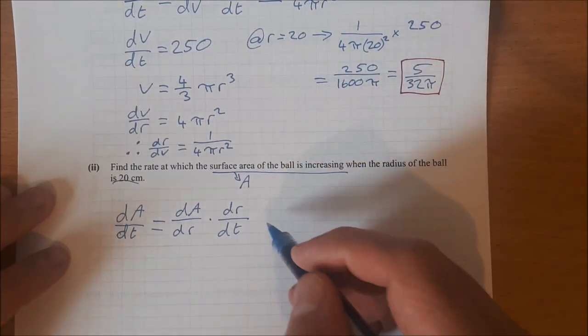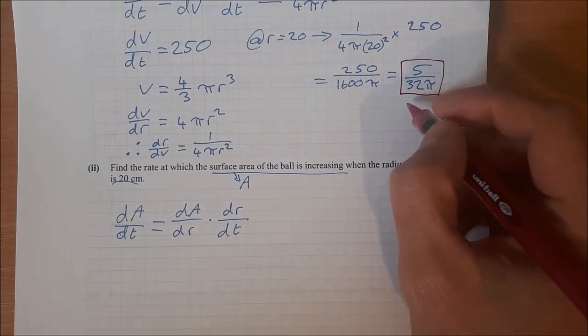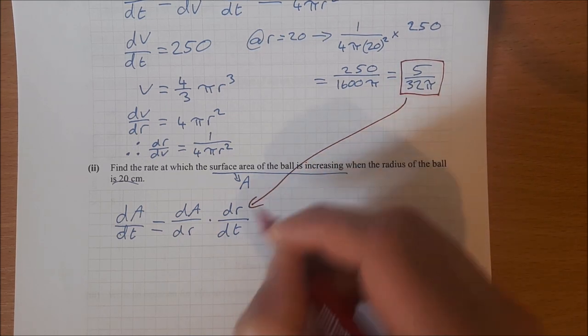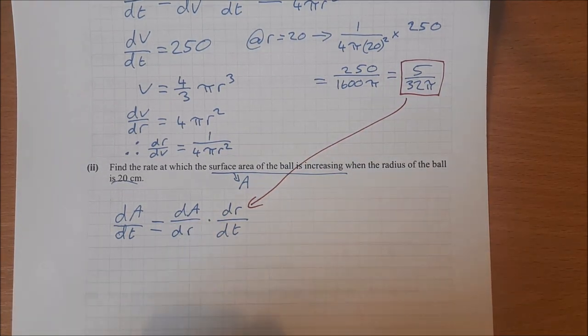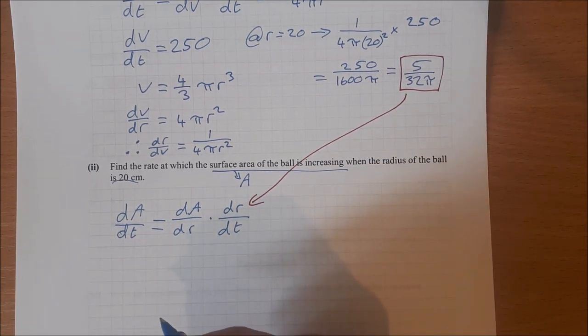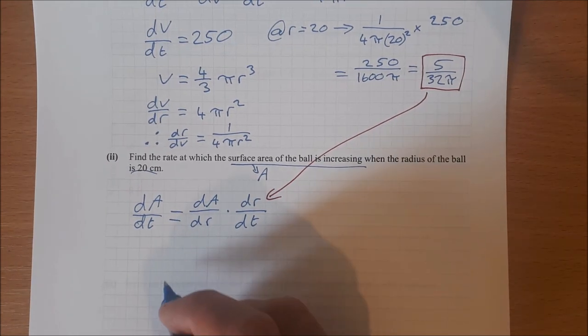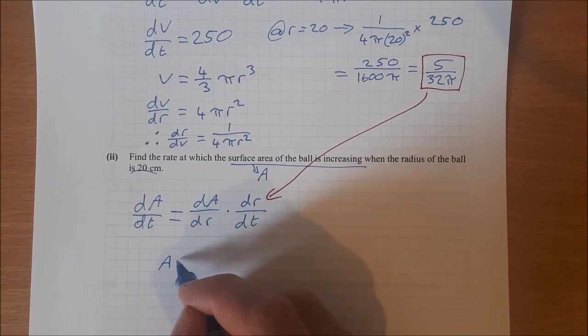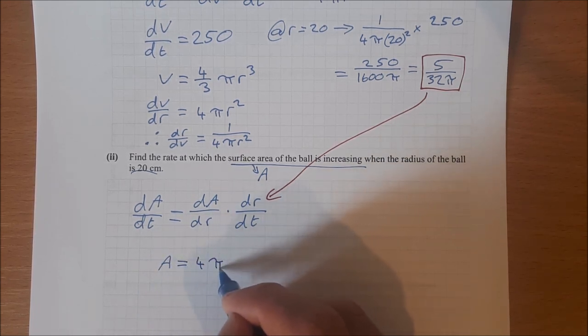So dr/dt is up here, so I already know one of them. So all I need to do is find dA/dr. To find dA/dr, how do I find the area of a ball?